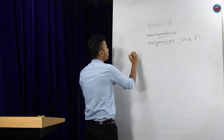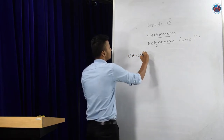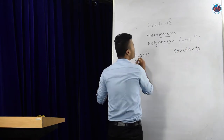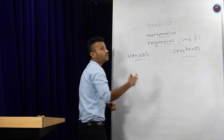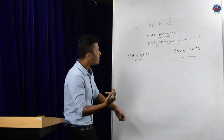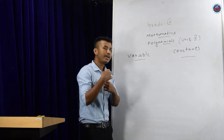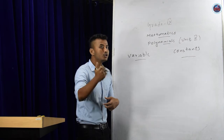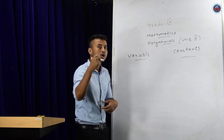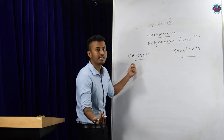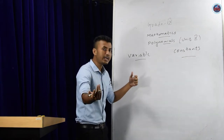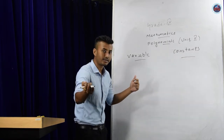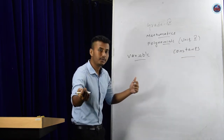There are two words: variables and constants. These two words are the founding stone of any expression. Variable means those values which can be changed or which can be altered — these are called variables. In an expression or equation, any x, y, z terms that we take are known as variables.